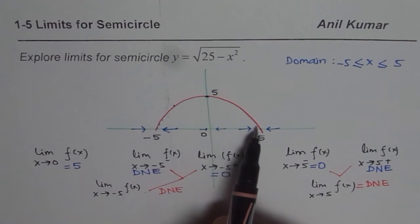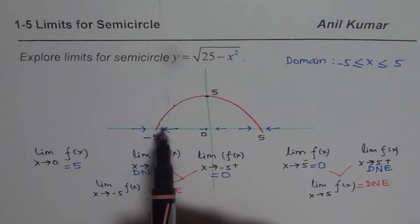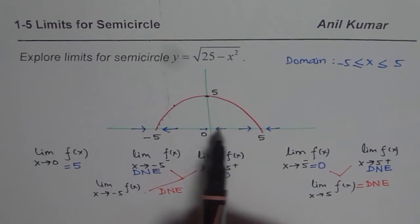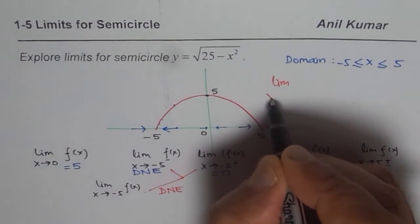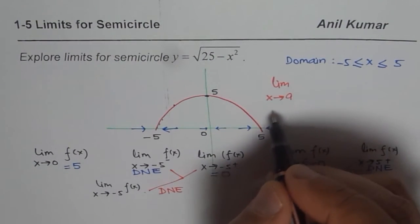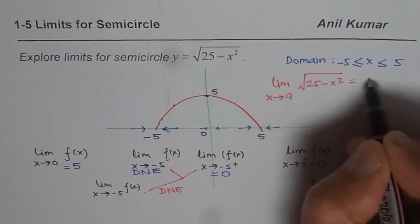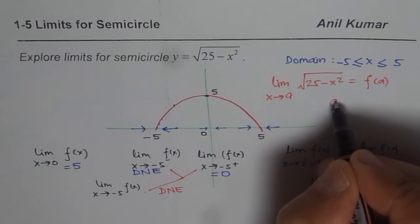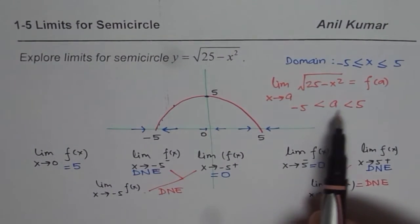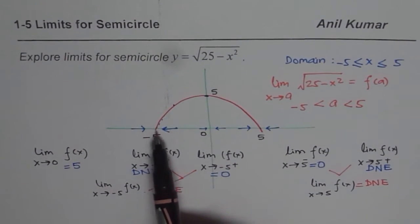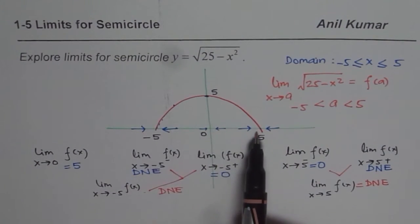However, the limit of the function approaches all points within plus and minus 5, and it is equal to the value of the function since it is continuous within this region. So we can summarize: the limit as x approaches a of √(25 - x²) equals f(a), if a is greater than minus 5 and less than 5. In general, the limit exists between minus 5 and plus 5, and it is equal to the value of the function since the function is continuous throughout.